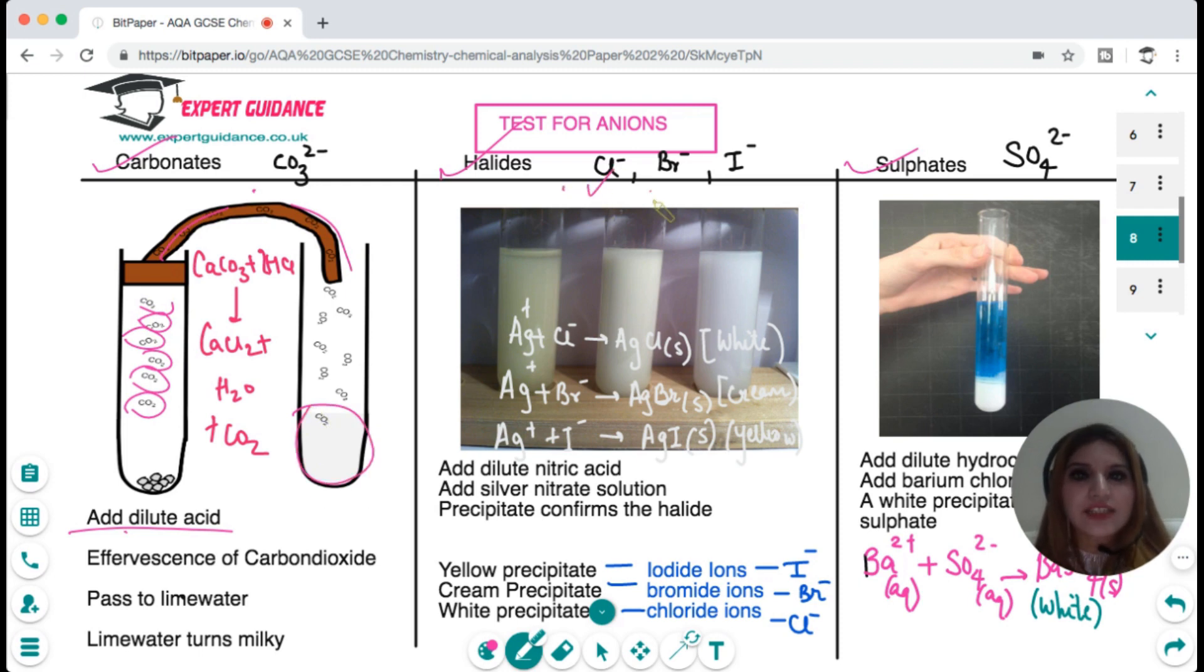For the test of chloride, bromide, and iodide we do a silver nitrate test. We add dilute nitric acid and then add silver nitrate solution and note the color of the precipitate. If the precipitate is yellow then iodide ions are present. If the precipitate is cream then bromide ions are present. If the precipitate is white then chloride ions are present.